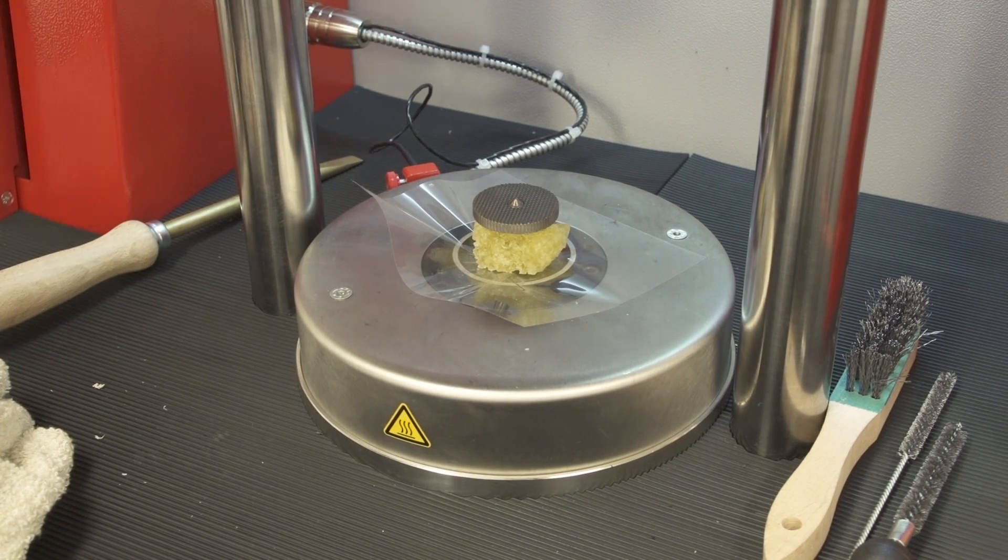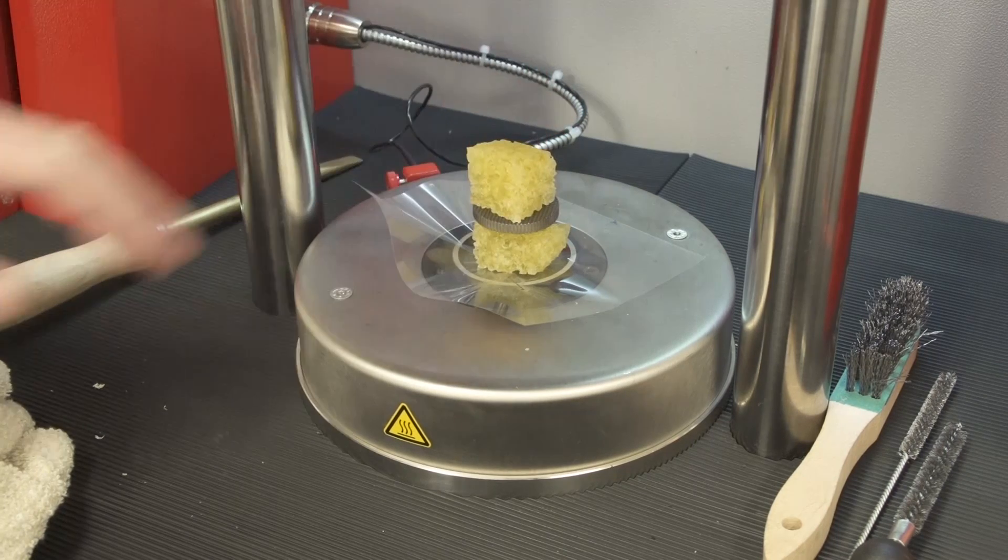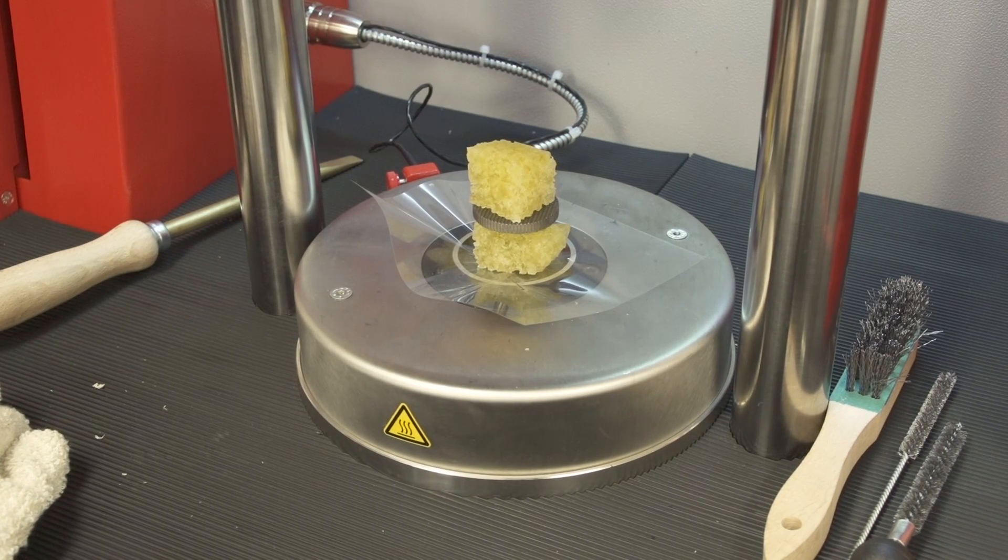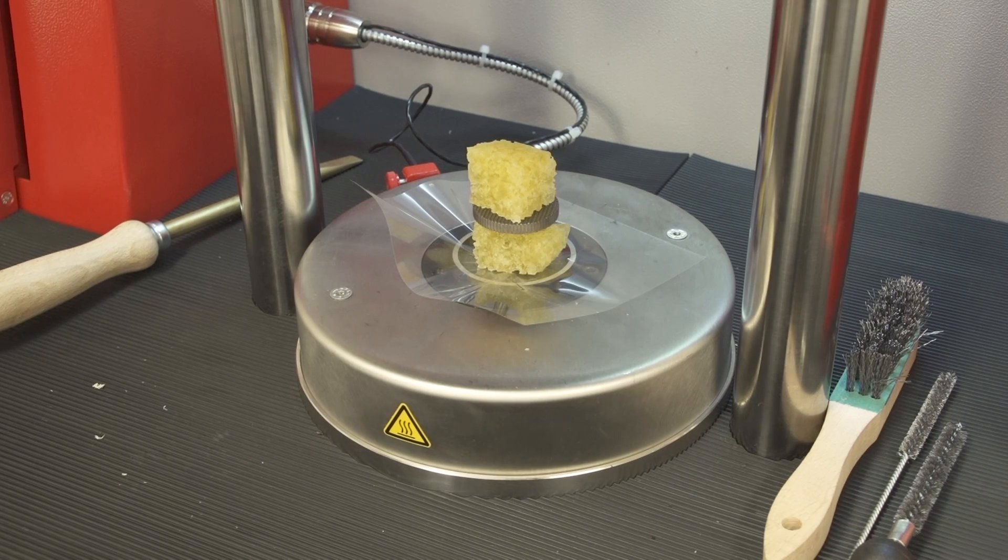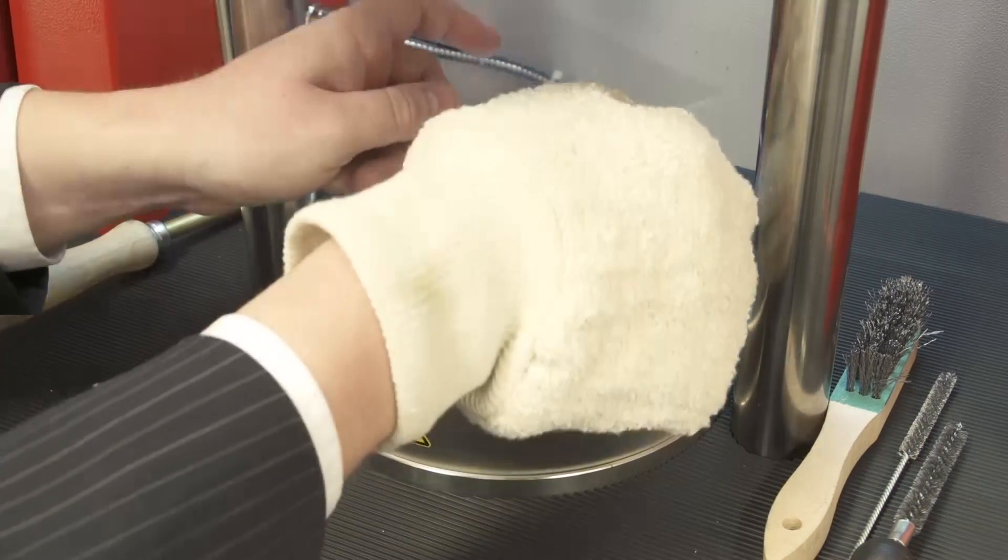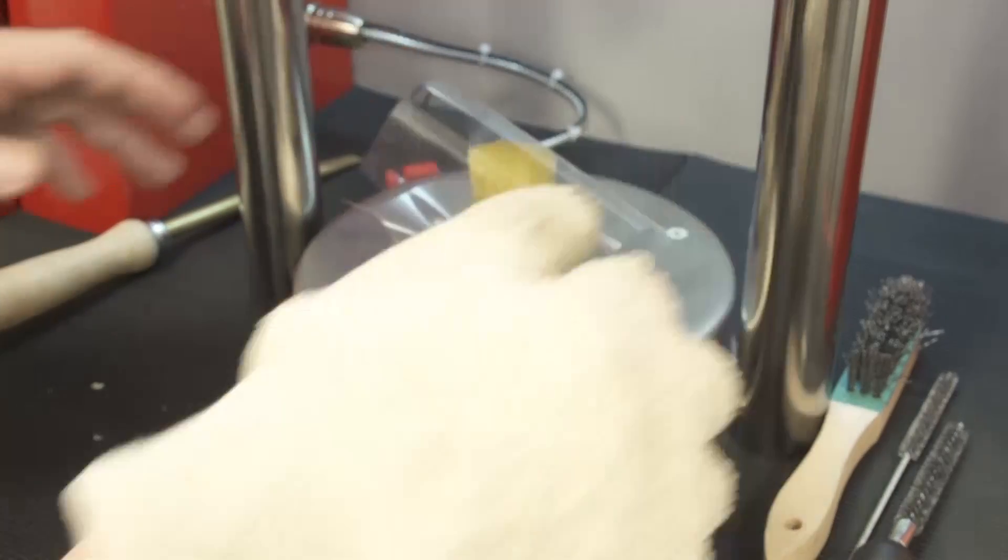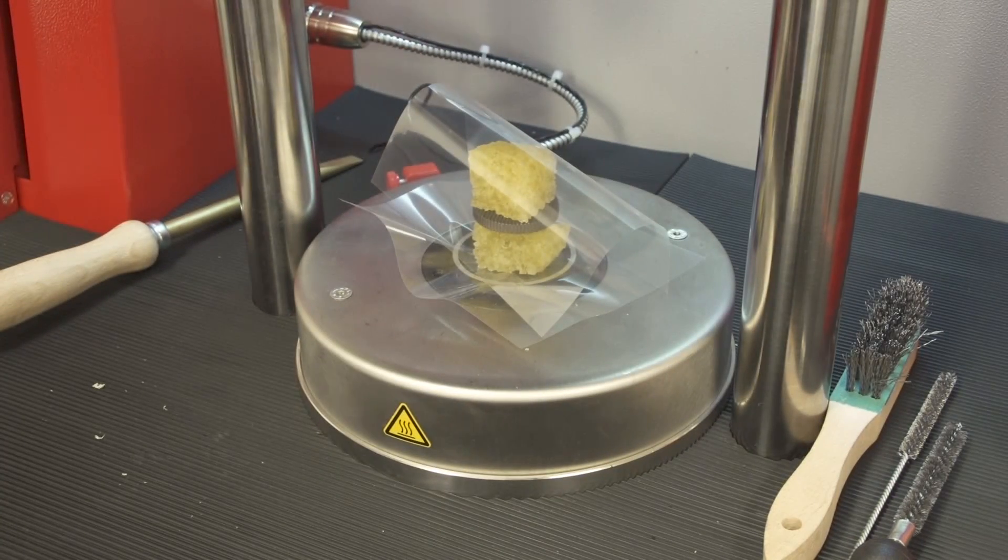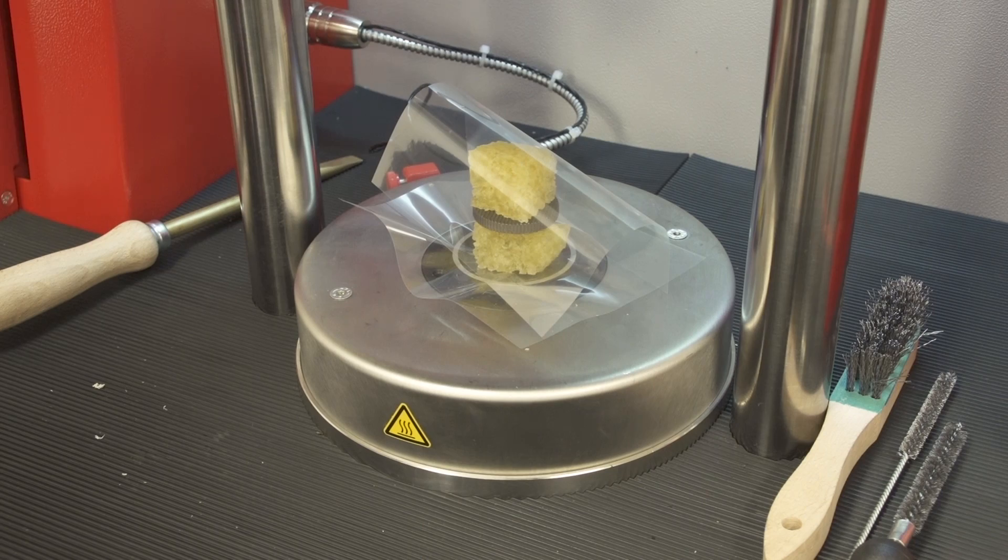Put another sample on top. Both samples together should have a volume of at least 25 cubic centimeters to correctly fill the dies. Put another sheet of testing film on top and then hit the start button on the front of the instrument.